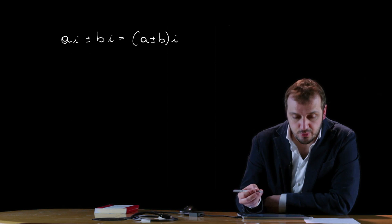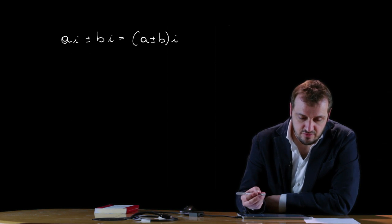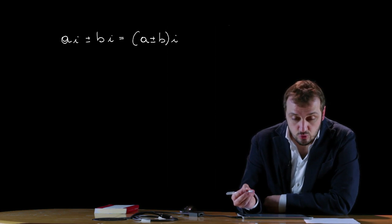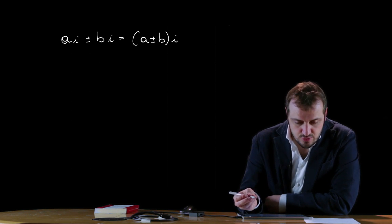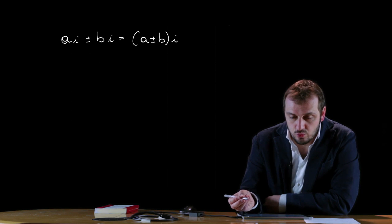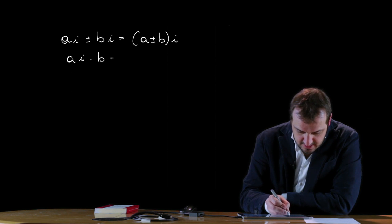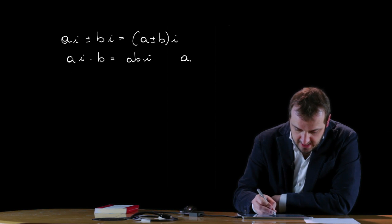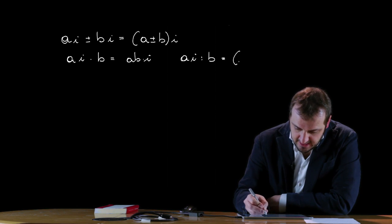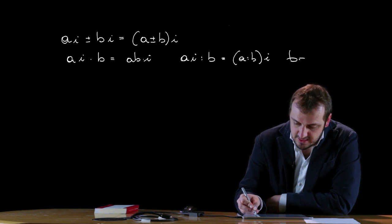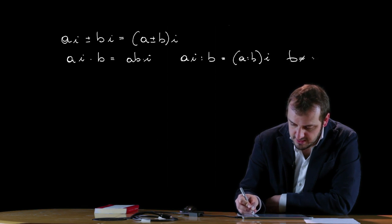It is also possible to compute a product or quotient between an imaginary number and a real number. In this case the result is still an imaginary number. For example, Ai × B equals ABi, and likewise Ai ÷ B equals (A/B)i. Obviously B must be different from zero.